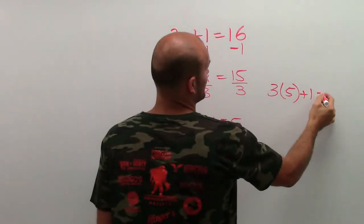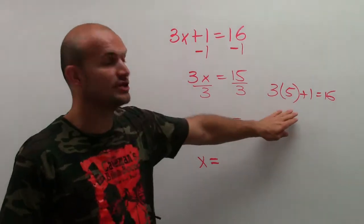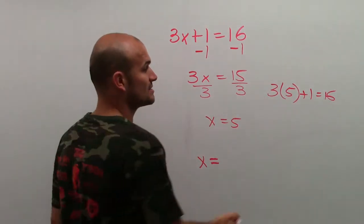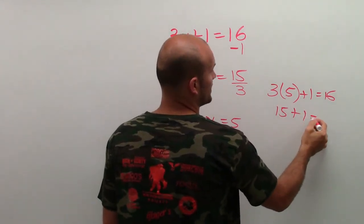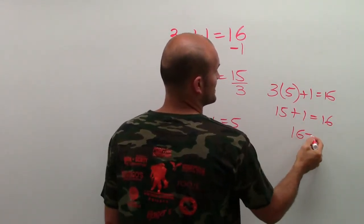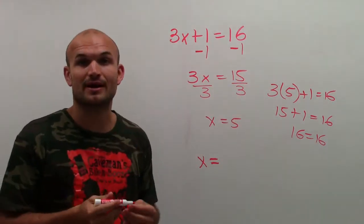And if that produces a true statement, then we know that's the correct solution. 3 times 5 is 15 plus 1 equals 16. 16 equals 16. Therefore, we have a correct solution as our equation is right.